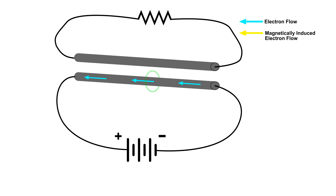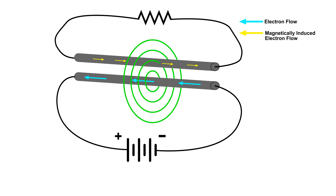And of course simultaneously, a magnetic field is being produced. And when that magnetic field cuts across our wire at the top there in that small circuit, we can see that it induces a current. But notice the direction of the current — it's in the opposite direction.